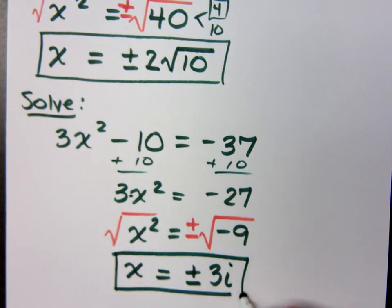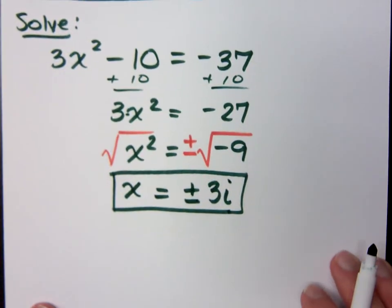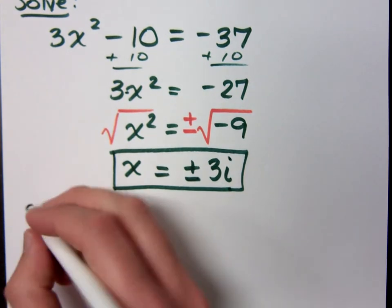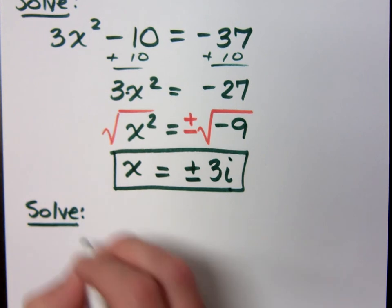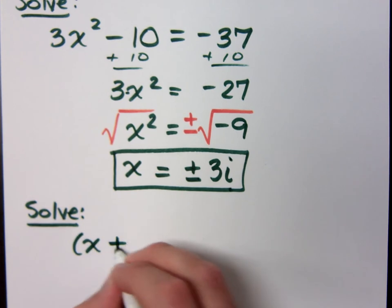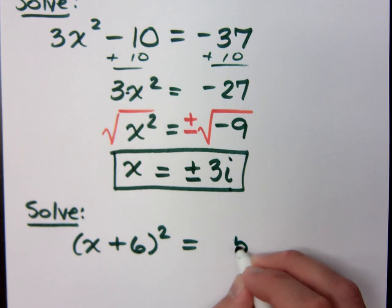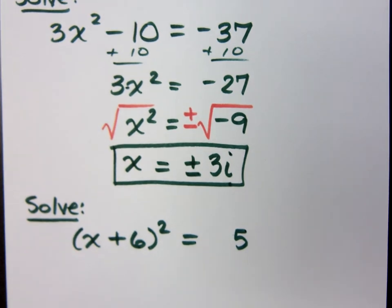Yeah, don't forget about the i. What do you guys think? Is that good? Si, por supuesto. All right, let's do one more here. This should be a nice, this is a nice guy. The quantity of x plus 6 squared equal to 5.